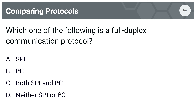I invite you to pause the video right now, go to our website, pull up the downloadable PDF, and answer the questions on your own. Then return and compare your answers to the correct answers, which I'm about to provide with short explanations. So I've given you that moment to pause — now let's unpause and answer all the questions. The first question is: which of the following is a full duplex communication protocol? The options are SPI, I2C, both, or neither.